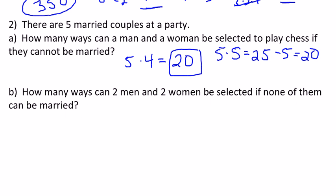B is a little bit harder, so how many ways can two men and two women be selected if none of them can be married? You could start by, there's a couple ways you could do this, but one way is you could start by selecting the two men, and so you do five choose two, which means there are ten ways that you can select the two men.